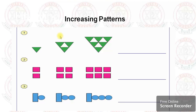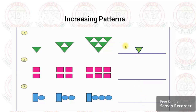To complete the pattern you have to observe it first. Here there are green triangles — observe how they are arranged. First it is one triangle, next it is three — above that one they have kept two triangles. Again you see two, again three.